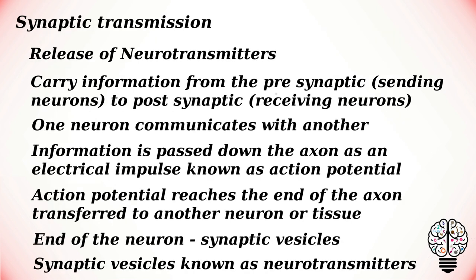Synaptic transmission involves the release of neurotransmitters. Neurotransmitters carry information from the pre-synaptic or sending neuron to the post-synaptic or receiving neuron. Synaptic transmission is the process by which one neuron communicates with another. Information is passed down from the axon of the neuron as an electrical impulse known as action potential.